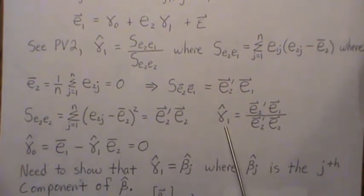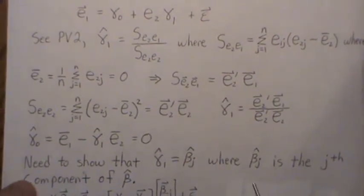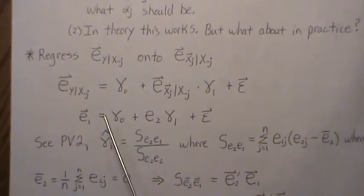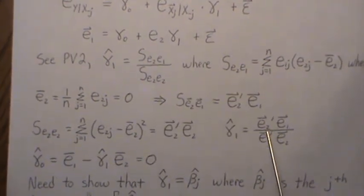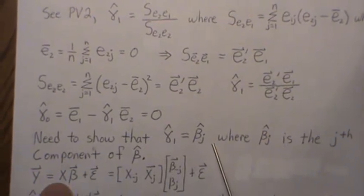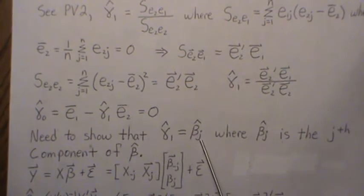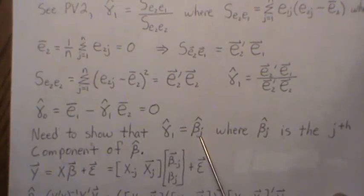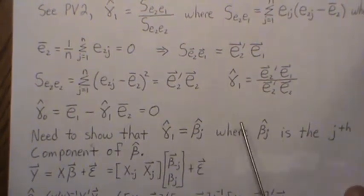What we need to show is that the least squares estimate for gamma 1 is actually beta j hat, the jth component of the least squares estimate vector. That's kind of mind-boggling — we're taking residuals from two different regressions, regressing them onto each other, and claiming the slope equals the least squares estimate from the original model. If this is true, and it is, it gives a whole new meaning to beta j: it represents the relationship between y and xj with all the other variables' contributions removed or held constant.